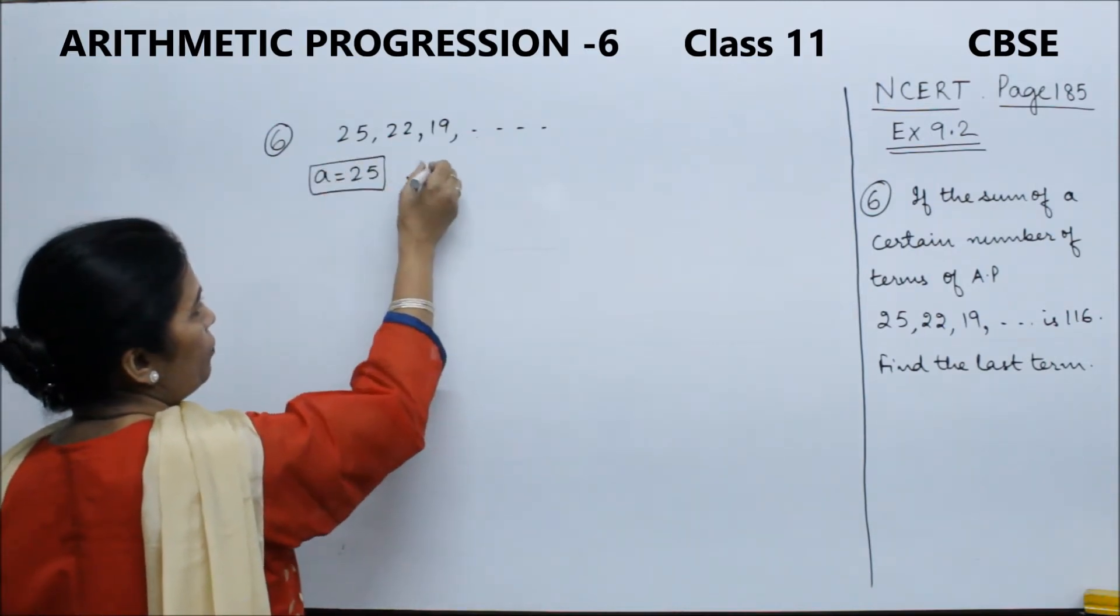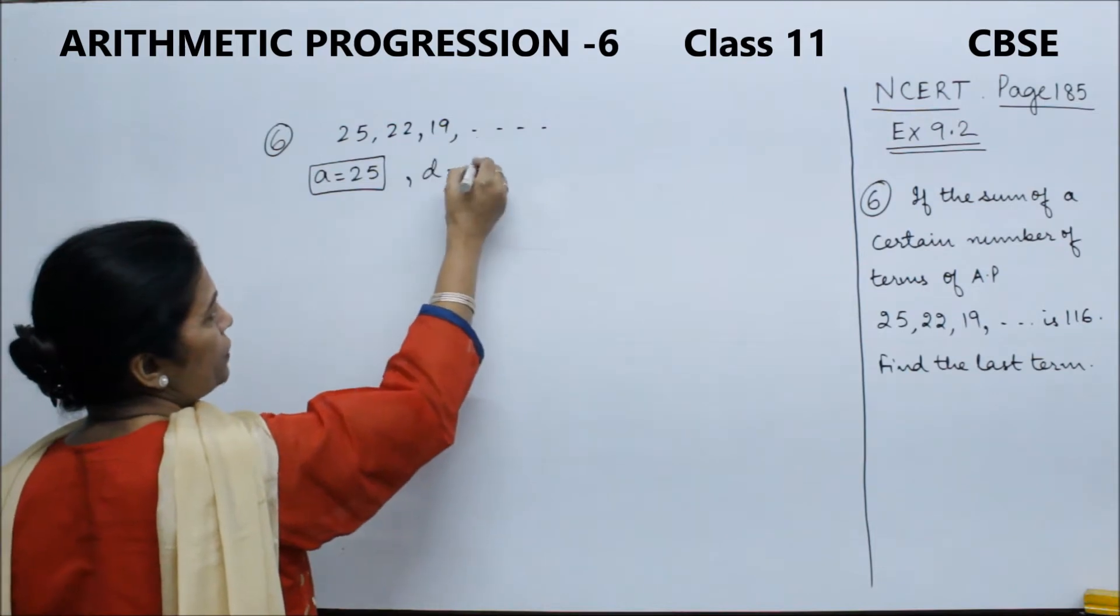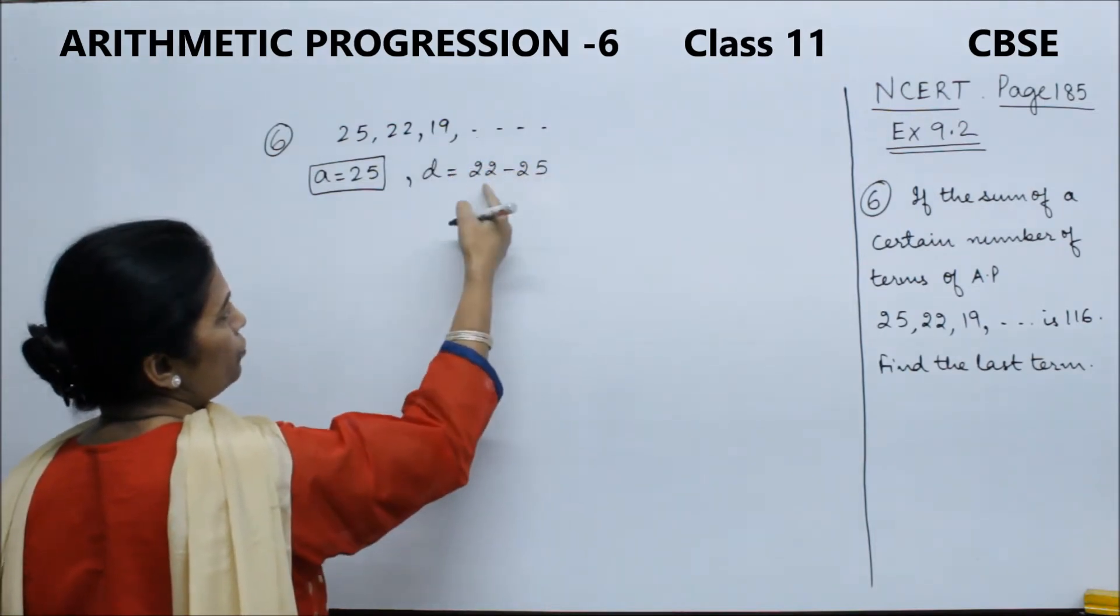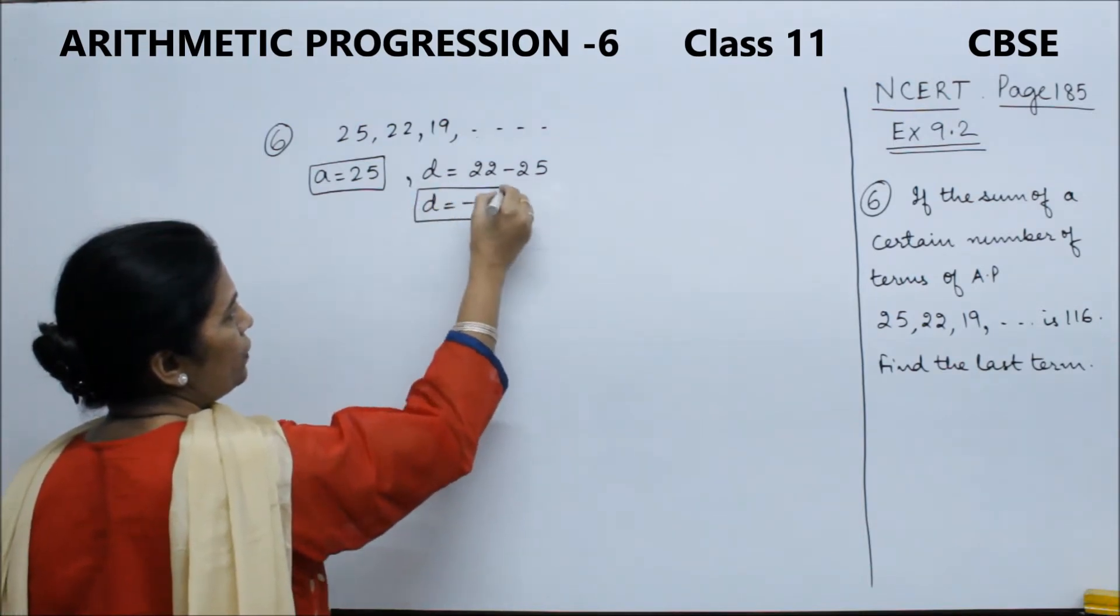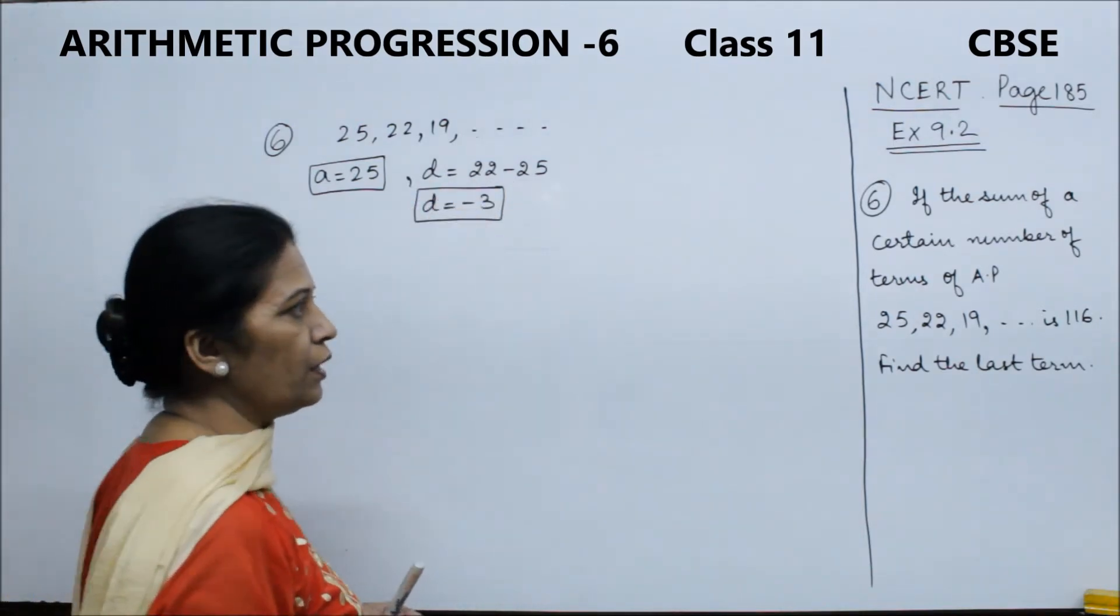Then, common difference - how do we find it? Second term minus first term. So, 22 minus 25 equals negative 3. So, common difference is negative 3.